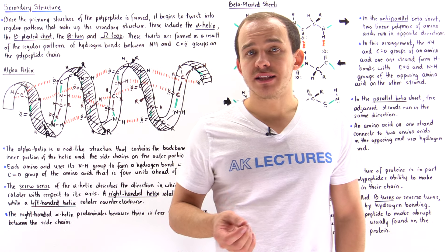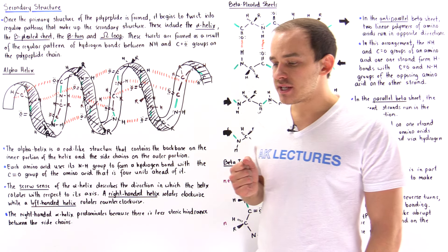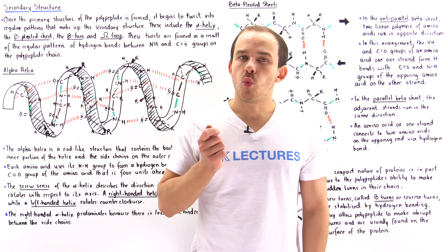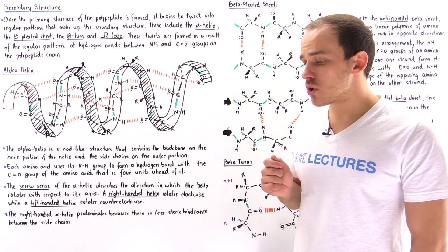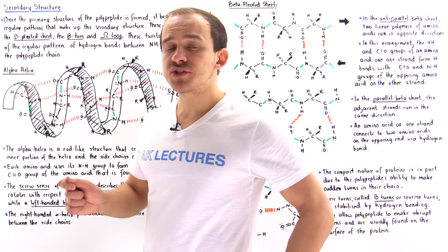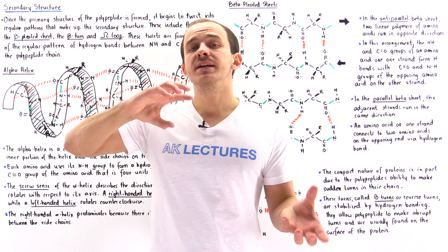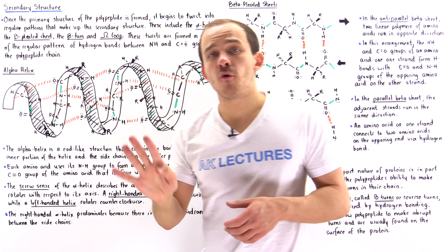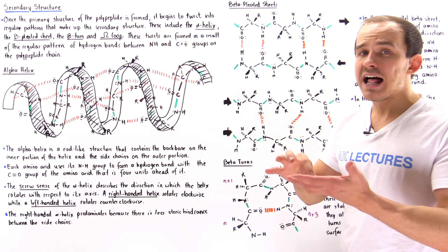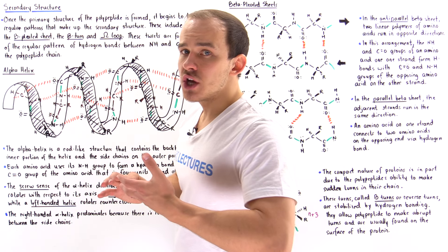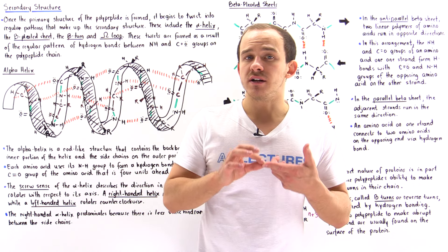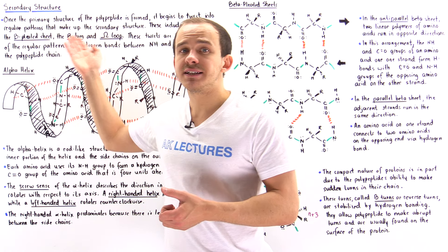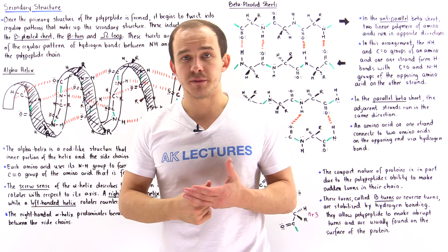The primary structure of a polypeptide describes that polypeptide as being a linear polymer of a specific sequence of amino acids. Once the polypeptide forms its primary structure, that primary polypeptide begins to twist and turn via regular patterns. There are four different types: alpha helixes, beta pleated sheets, beta turns, and omega loops. These four types compose the secondary structure of our protein.